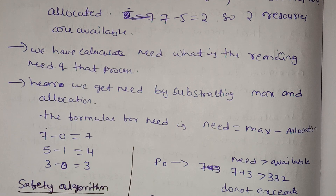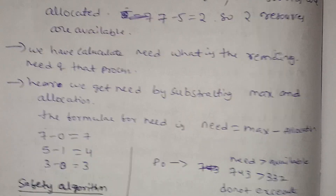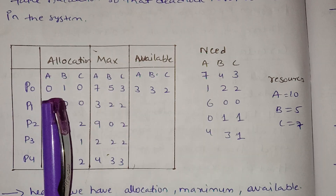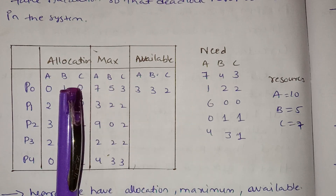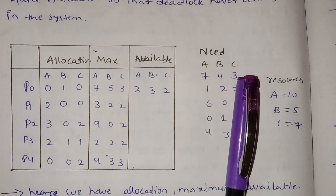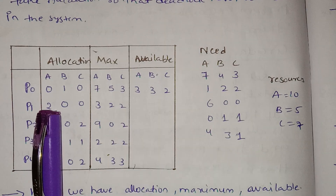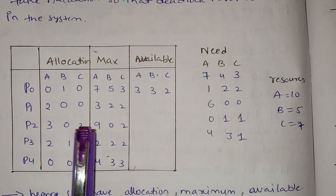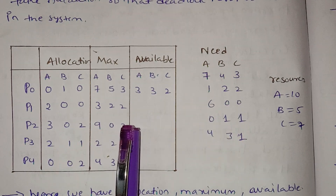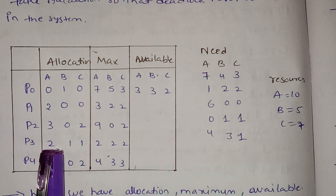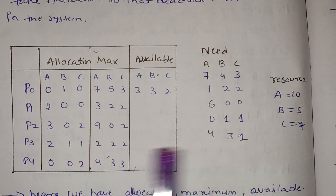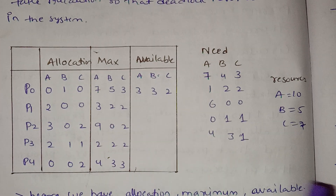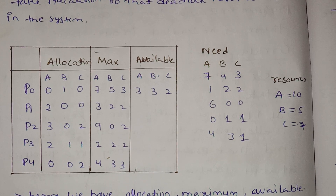Now we will see the need matrix. The need is calculated as Maximum minus Allocation. For P0: A is 7-0=7, B is 5-1=4, C is 3-0=3. For P1: A is 3-2=1, B is 2-0=2, C is 2-0=2. For P2: A is 9-3=6, B is 0-0=0, C is 2-2=0. For P3: A is 2-2=0, B is 2-1=1, C is 2-1=1. For P4: A is 4-0=4, B is 3-0=3, C is 3-2=1.